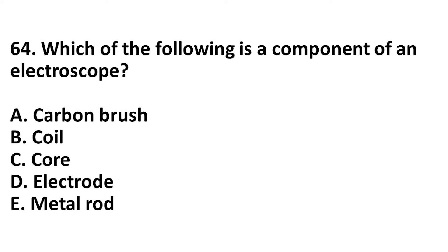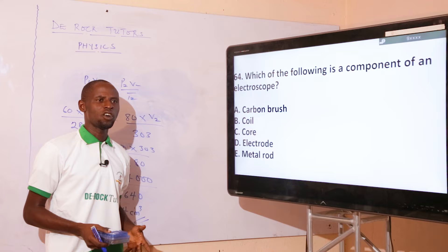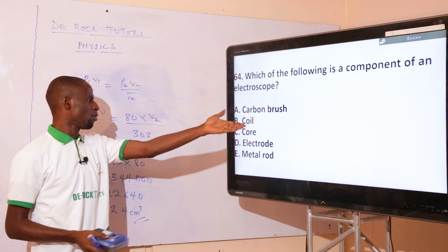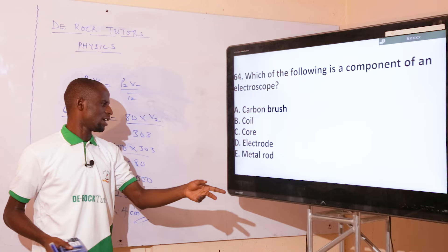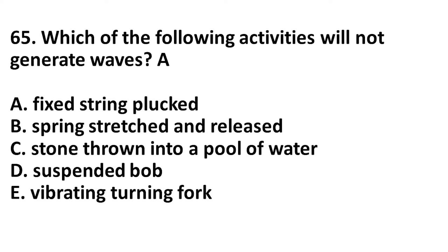Which of the following is a component of an electroscope? An electroscope is a device for detecting electric charge. Looking at the components: a carbon brush is not there, a coil is not there, and an electrode is a component of a cell. The correct option is the metal rod — the metal rod that encompasses the gold leaf.